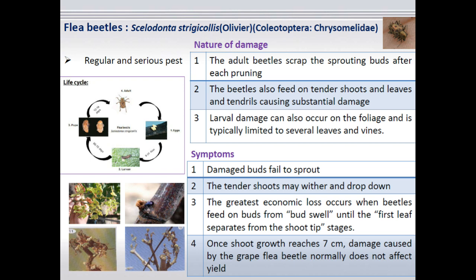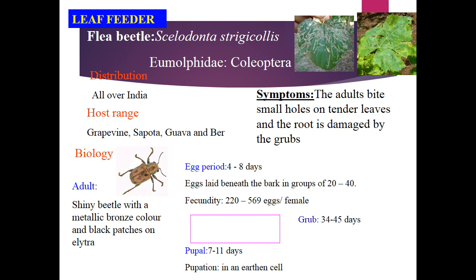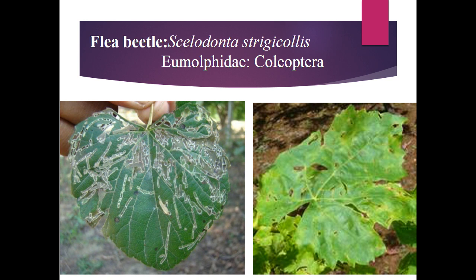The next one is flea beetle, Scelodonta strigicollis, which is a small beetle. Both adults and grubs cause damage. Adults lay eggs in soil around the trunk region, and the grub feeds on roots of the vine. In severe cases when population is very high, wilting symptoms occur. Most serious is the adult stage, which attacks new flush or younger leaves. Soon after pruning, when new flush emerges, this beetle starts feeding on new flush and younger leaves, which ultimately leads to drying up of the leaf, affecting inflorescence development and bunch formation.